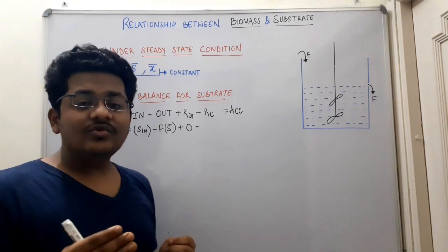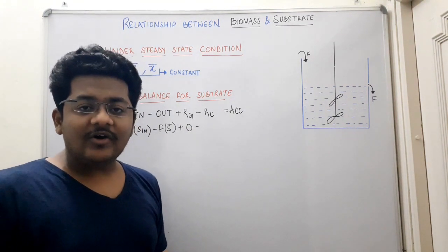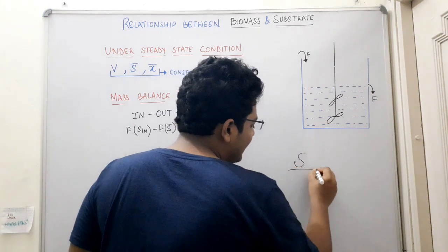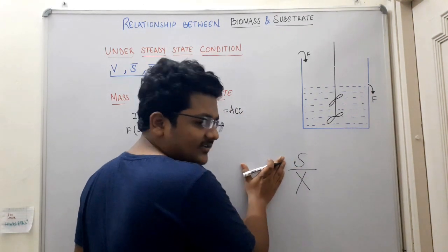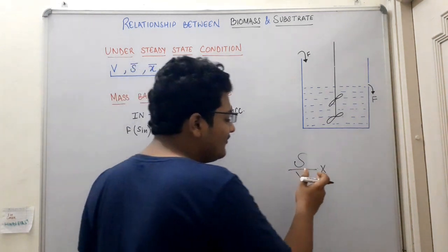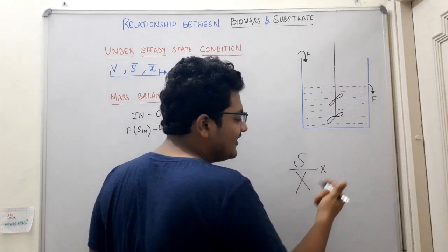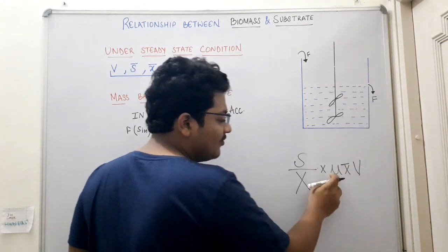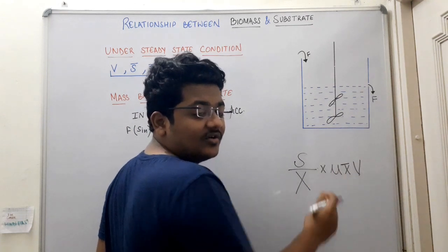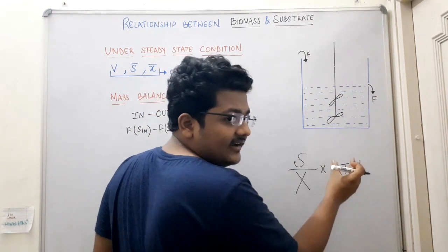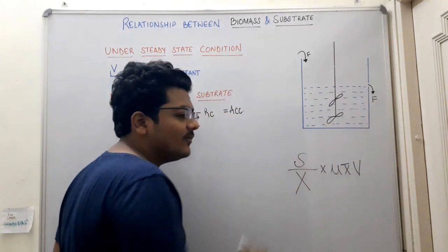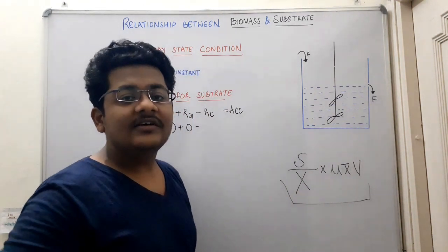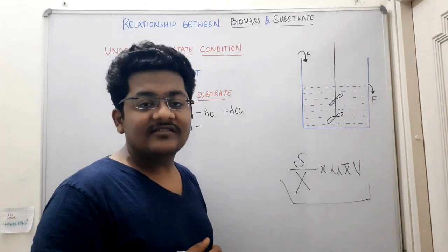For finding the rate of consumption, we need substrate consumed per unit biomass, then multiply by the entire biomass. If S is the total substrate consumed and X is the total biomass generated, we get substrate consumed per unit biomass as S/X. Multiplying by the rate of biomass generation — which is mu times X times V — where mu is the specific growth rate, X is biomass concentration per unit volume, and V is the entire bioreactor volume, gives the rate of substrate consumption.